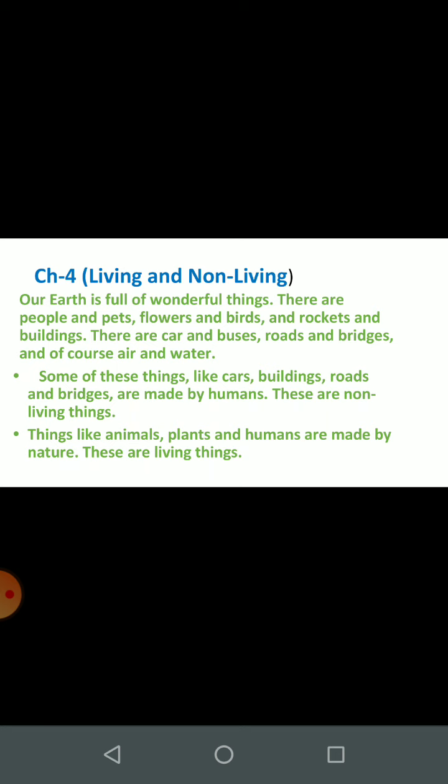Yahaan gaariyan, bus, road, pool, hawa, paani — sabhi maujud hain. Some of these things like cars, buildings, roads and bridges are made by humans. Kuch cheezein jaise gaariyan, imaratein, road, bridge — yeh manushya dwara banai gayi hain. These are non-living things. Yeh Nirjiv cheezein kehlaati hain.